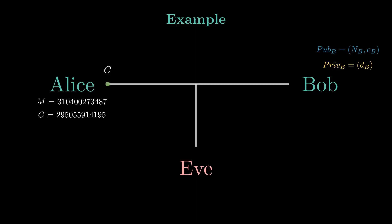After that, she sends the ciphertext to Bob. Bob receives the ciphertext and uses his private key d to decrypt it, where m equals c raised to the power of d modulo n. If Eve intercepts the message, she cannot decrypt it because she doesn't have Bob's private key.